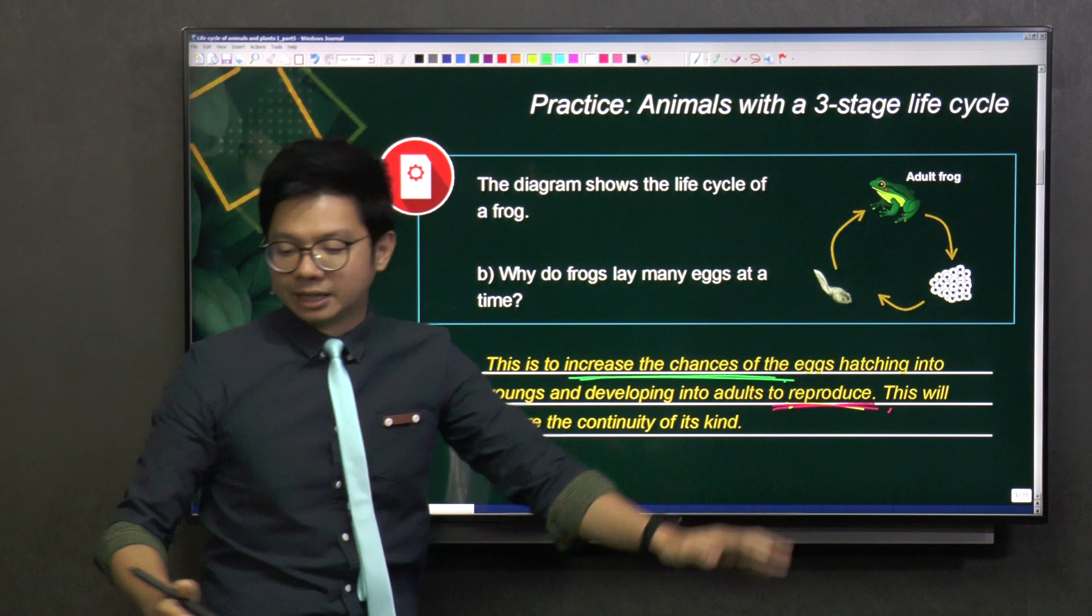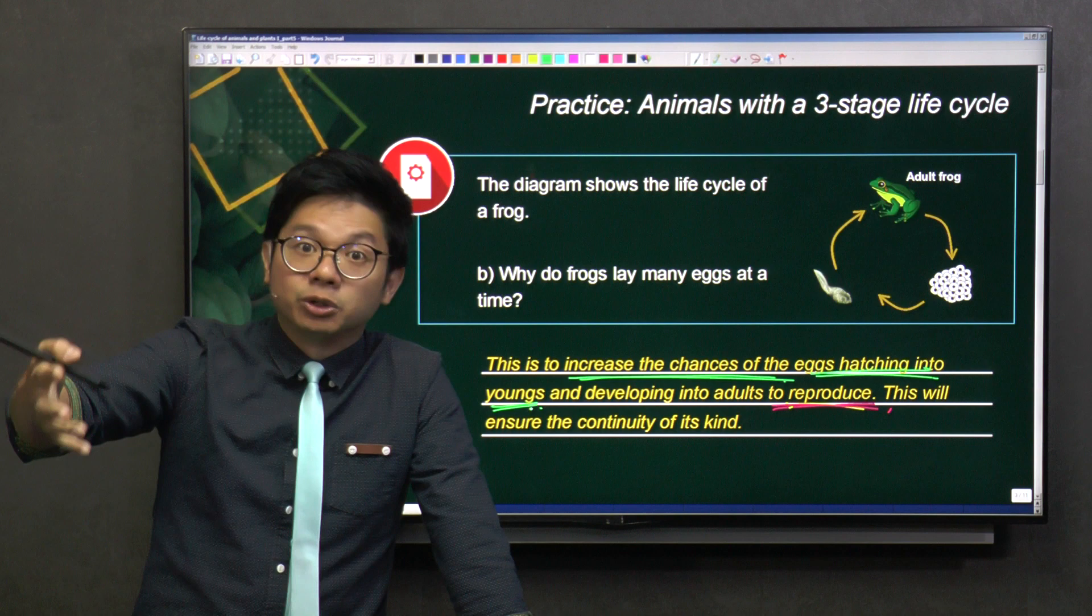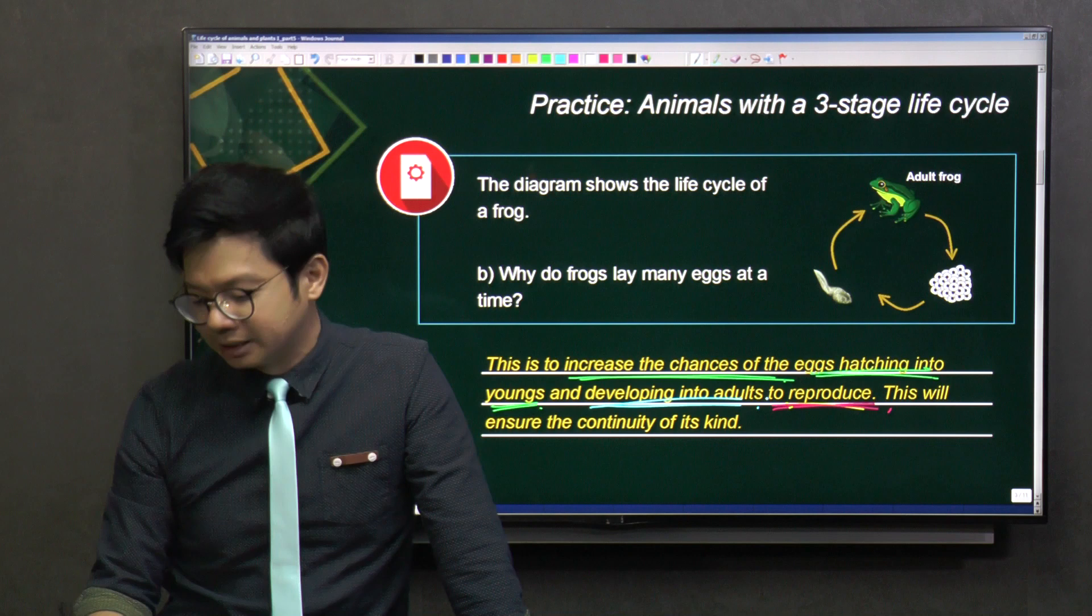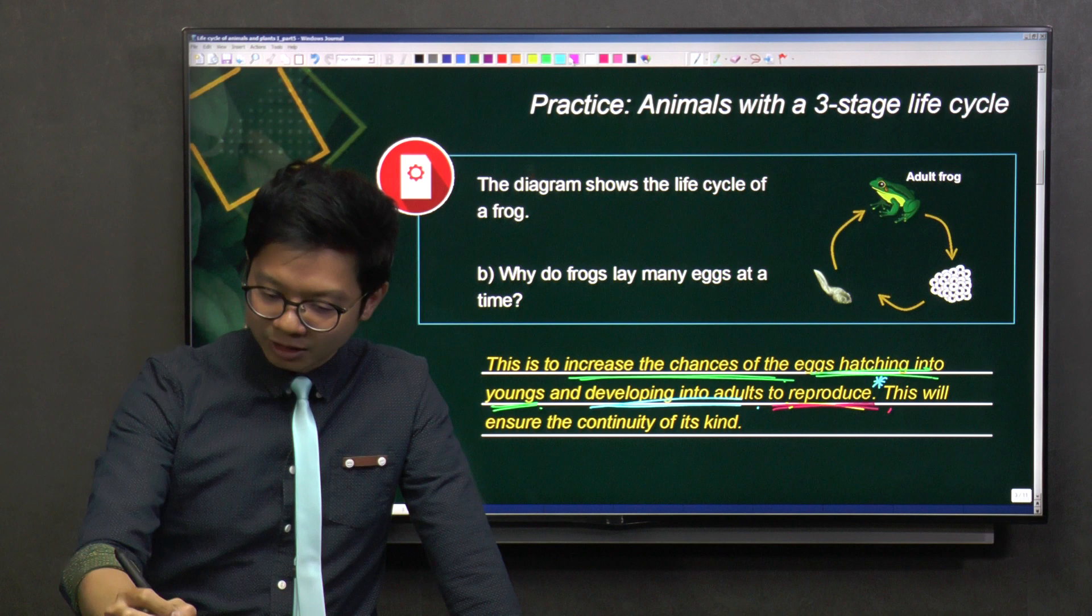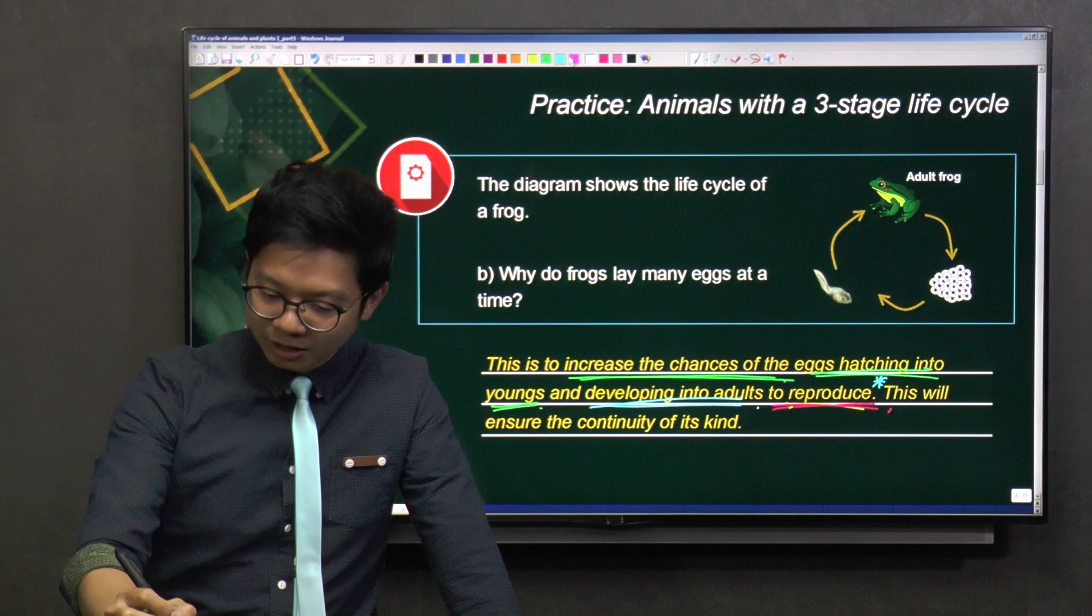So if they're talking about the egg, you describe starting from the egg - what will happen to the egg? The egg will hatch into youngs, and they need to reproduce. So from the young, they have to develop into adults. Then after that, you reach the angle of reproduce. Then after that, you have to end off with another statement, which is this: This will ensure the continuity of its kind.